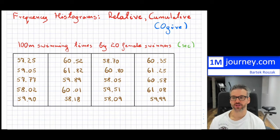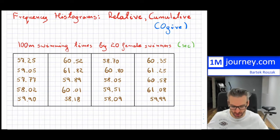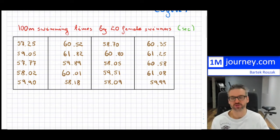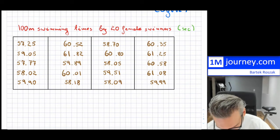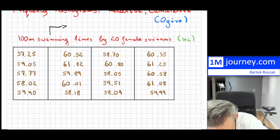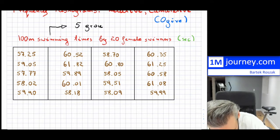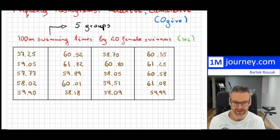So we have this data of 100 meter swimming times by 20 female swimmers, so it is all in seconds. If you count it up, you will get that 20. And what I want to do is I want to be able to create a grouped frequency histogram for this particular data. One of the first things that I need is I'm going to need to figure out my intervals from the class weight, which I'm going to calculate. I'm going to make the assumption that I'm going to be working with this data and I'm going to have five groups in total.